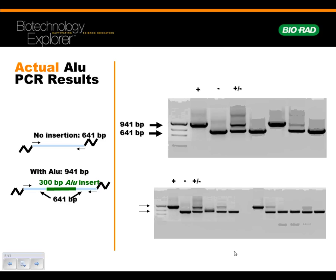In our PV92 lab we were testing for either no insertion or an insertion of this ALU. Here's some results again. Here are the standards which I had made up. This would be the plus-plus — that means homozygous plus-plus. Here's homozygous plus-minus, and heterozygous, where it has both plus and minus — one parent had the insertion and the other didn't. Here would be like student A — clearly they did not have the insertion, so it went faster in the gel. Here the student had the insertion; they were a plus-plus.